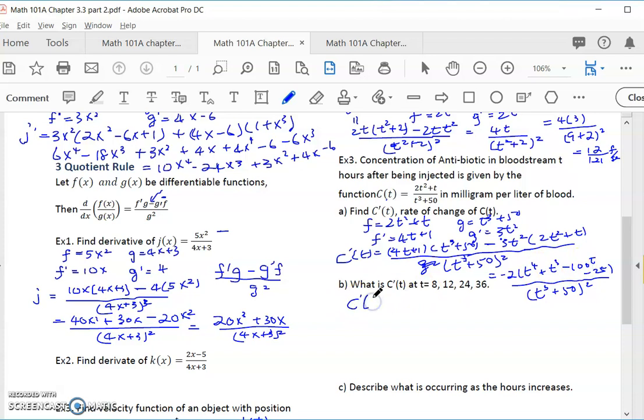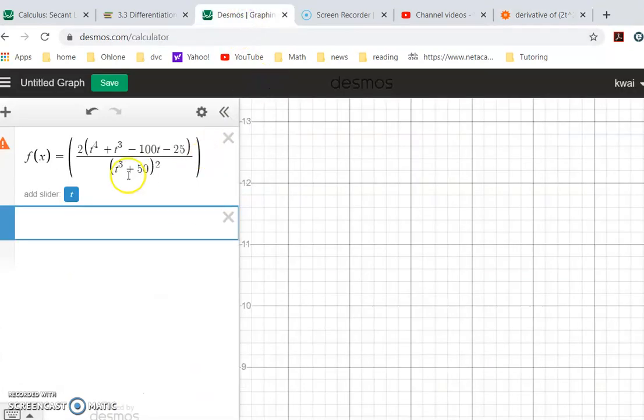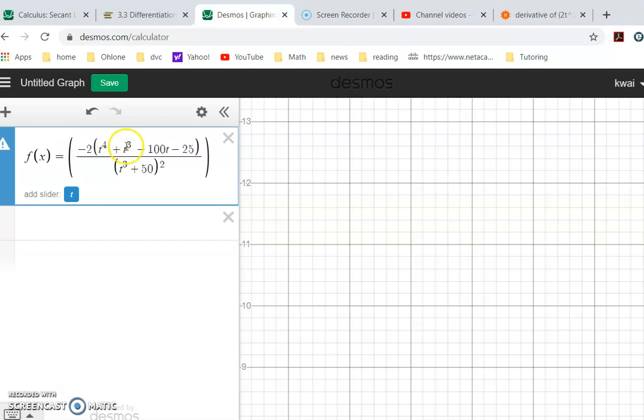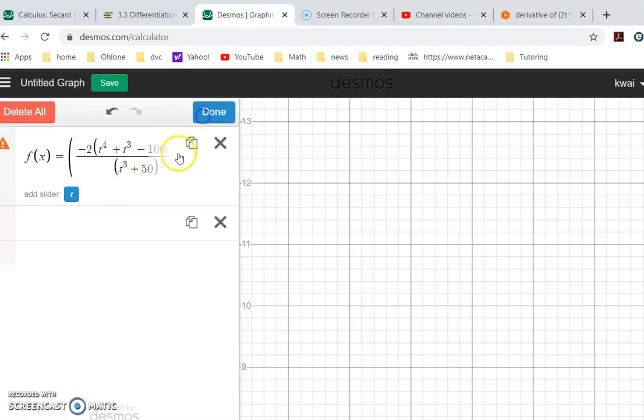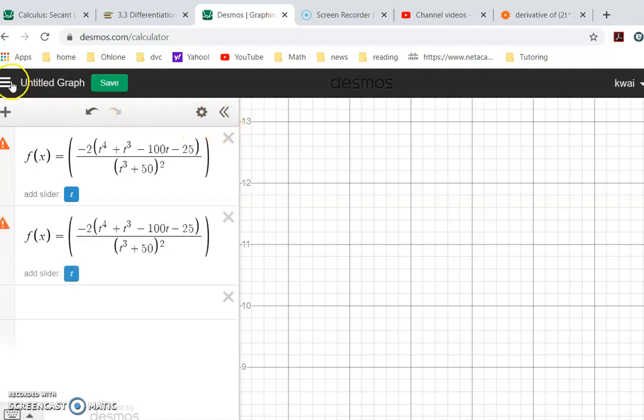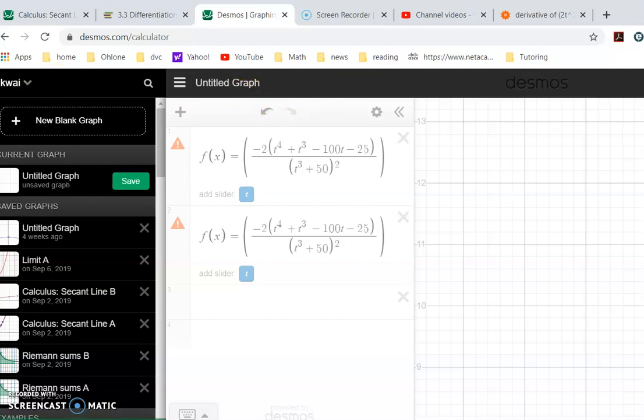Now, if they want C prime of t of 8, C prime of t of 12, C prime of 24, that means you have to plug in t equal to 8 here, and do a whole bunch of calculation. Maybe by hand is a little difficult, so I did it in here. Put the function, it should be negative 2. The function is negative 2t to the 4th plus 2t cubed minus 100t minus 25, and it's over t cubed plus 50 squared like this. Then I do the table, where's the table?